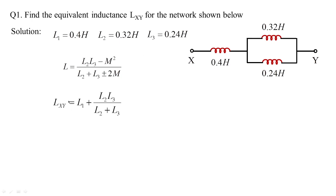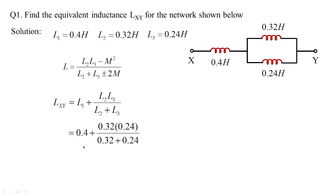The inductor L1 = 0.4 H is in series with the parallel combination of L2 = 0.32 H and L3 = 0.24 H. Substituting the values for L1, L2, and L3, we get Lxy = 0.537 H. This is a simple problem.